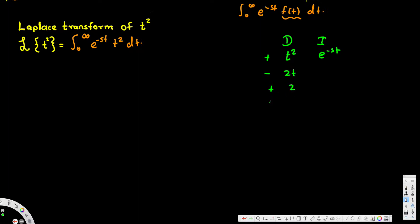The derivatives of t squared are: 2t, then 2, then 0. So we need four rows. Integrating e to the negative st gives negative 1 over s times e to the negative st. Integrating again gives 1 over s squared times e to the negative st. Integrating one more time gives negative 1 over s cubed times e to the negative st.